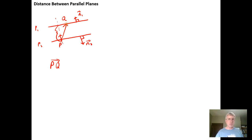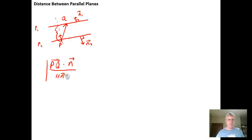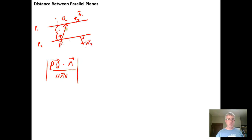If I find the projection of PQ onto that normal vector, I can then find the length of that projection, and I know the distance from Q to the plane — which is the same as the distance between the two planes. So it really boils down to finding the size of the projection of PQ onto either of the two normal vectors. It doesn't matter which one you choose. Find the size of that projection and you know the distance between the two planes.